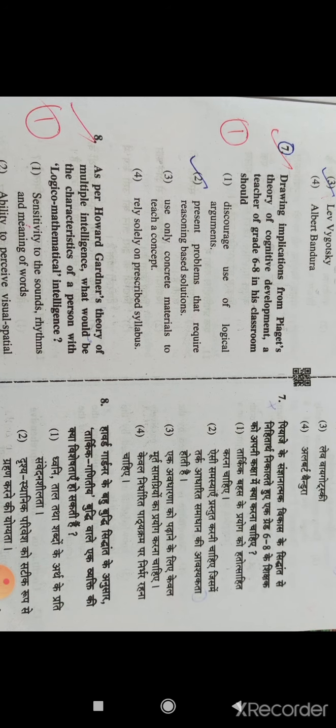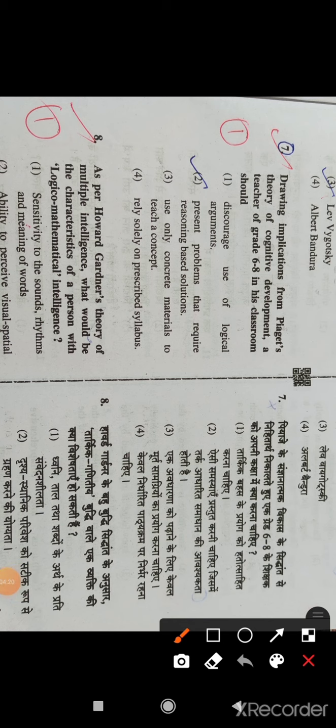Question number 7: Drawing implications from Piaget's theory of cognitive development, a teacher of grade 6 to 8 in his classroom should present problems that require reasoning-based solutions. So option B is correct.